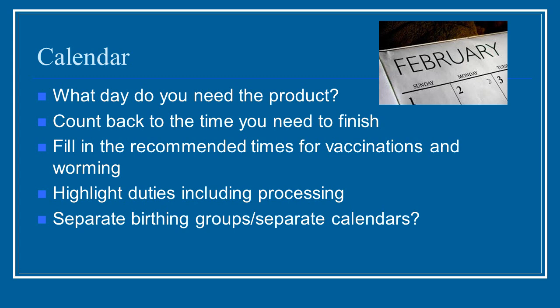I recommend using the calendar method to figure out your production scheduling. With a twelve-month yearly calendar, look at what day you need the product. If you're going to be doing farmers markets, many of them begin in the middle of May into the very beginning of June for summer outdoor markets. If you're thinking about doing lamb, they mature in about six months to around 125 pounds. So you need to count back — five months back from June gets you to December for birth. But you also have to leave time for processing, maybe about a month, which means the lambs would need to be born in November.